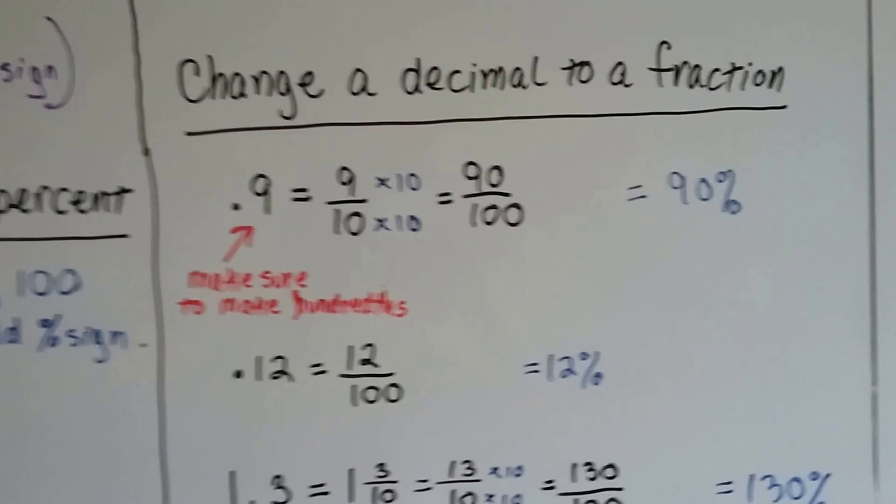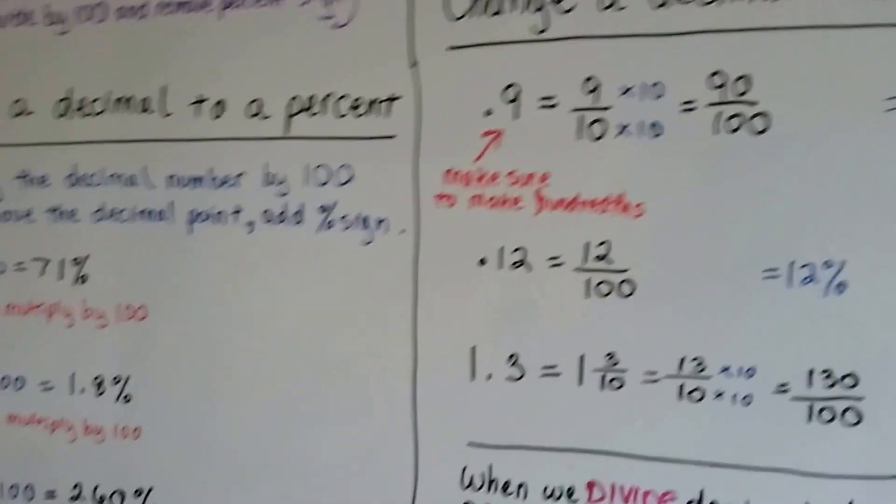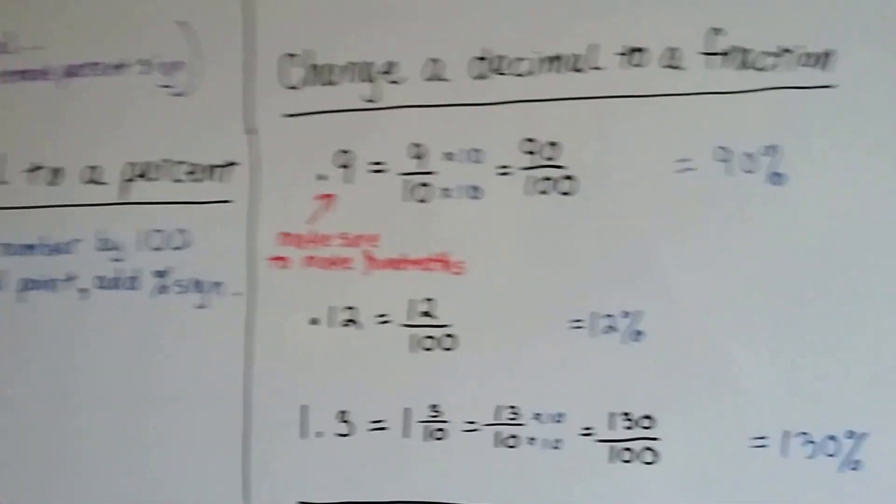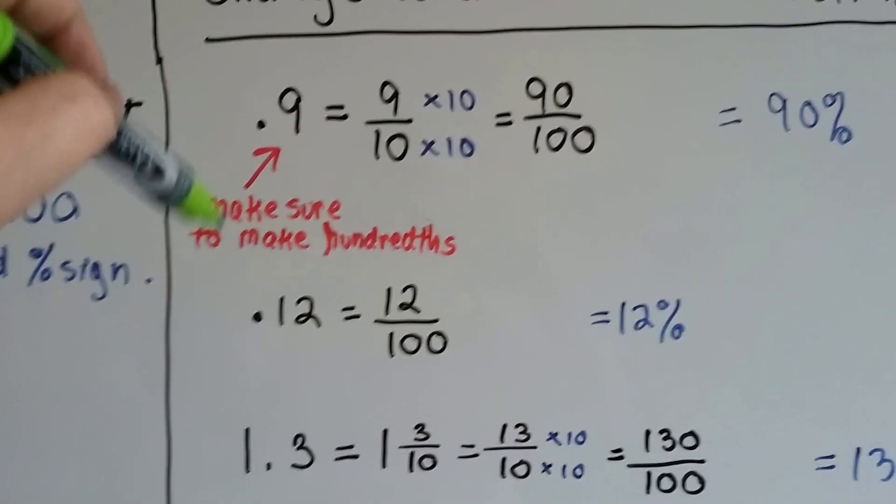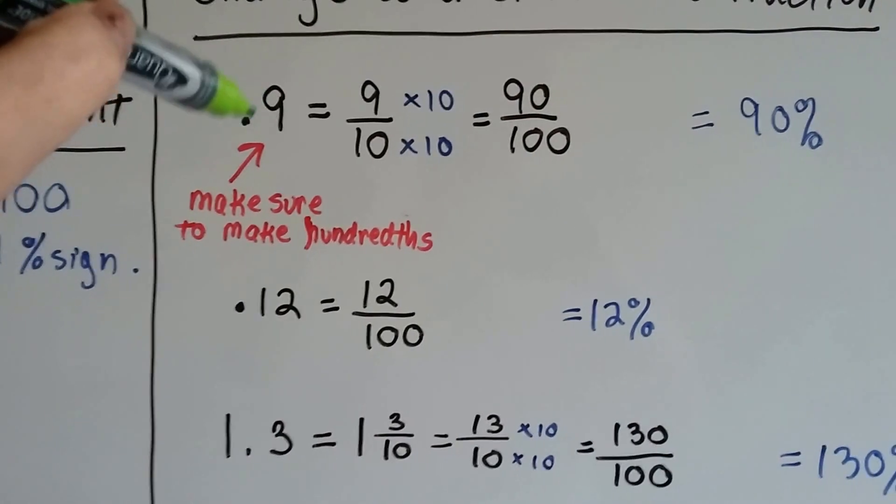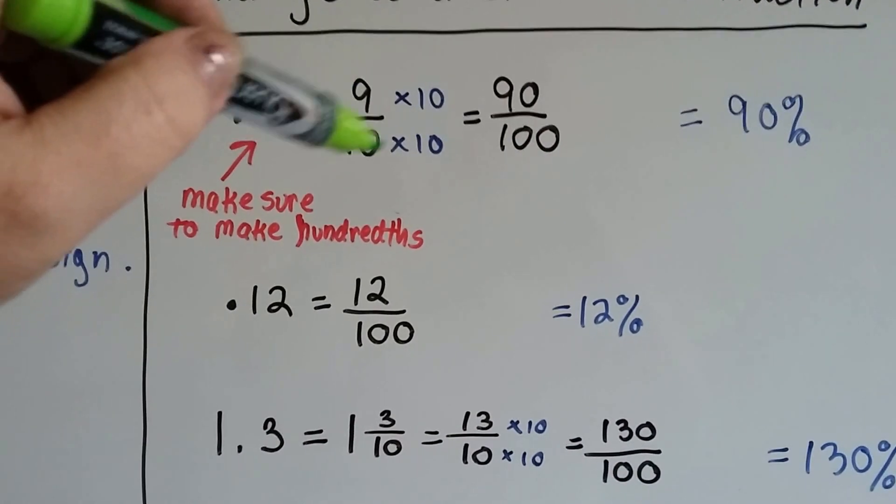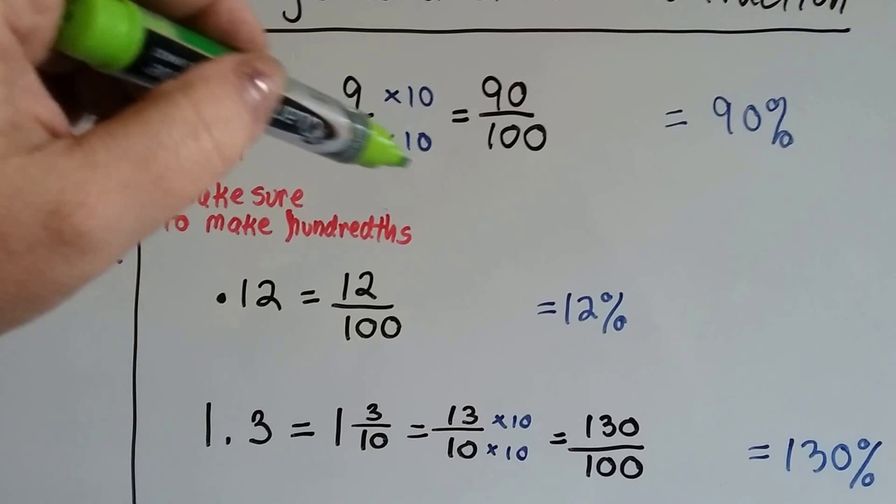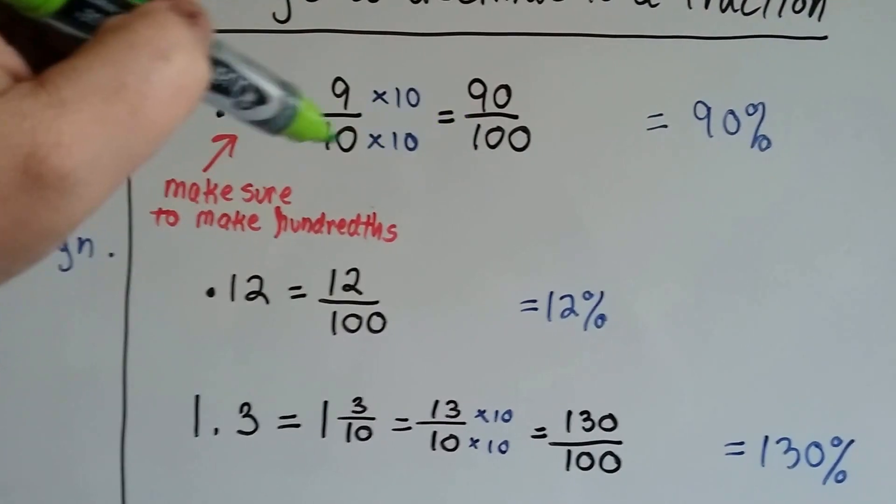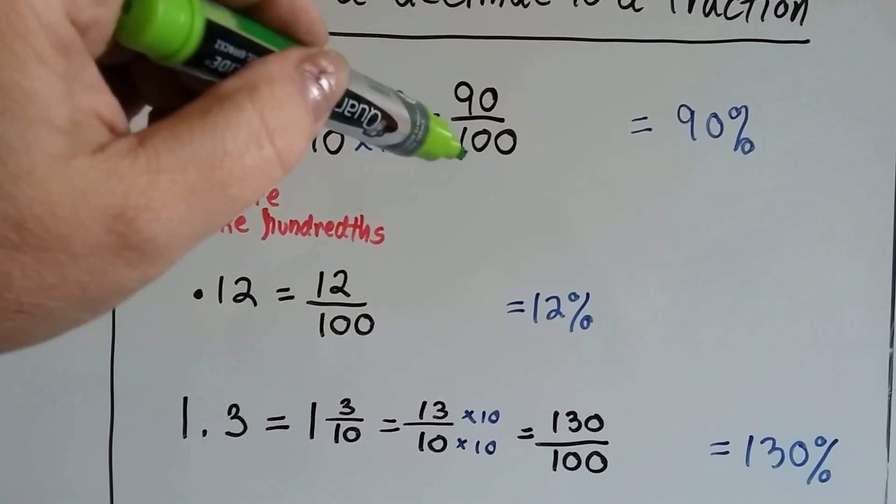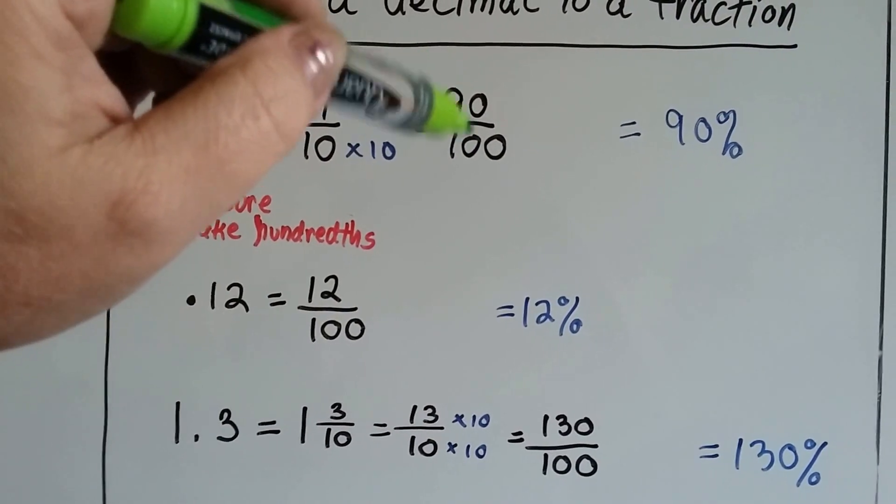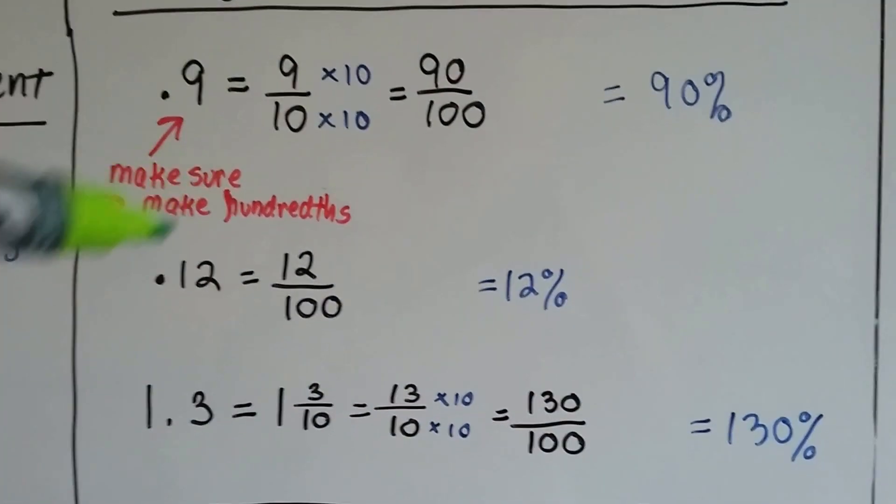Now to change a decimal to a fraction, so that we could move them all around. If you have .9, you have to make sure that you turn it into hundredths because this .9 means 9 tenths. So you have to multiply the numerator and denominator by 10 to get this 10 to be 100. So they're both multiplied by 10. They become 90 over 100. And we know that 90 hundredths is 90%.